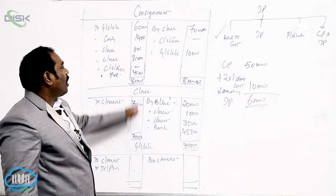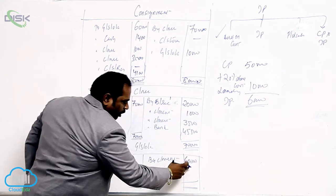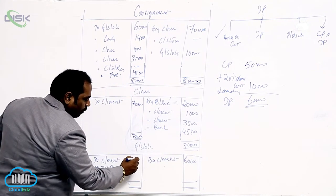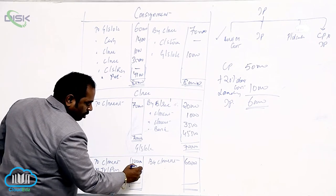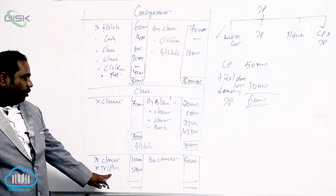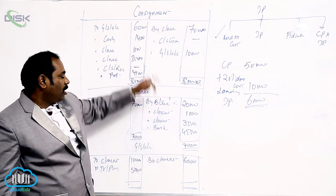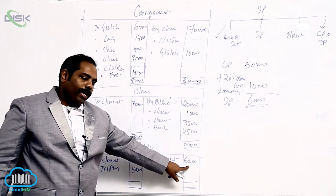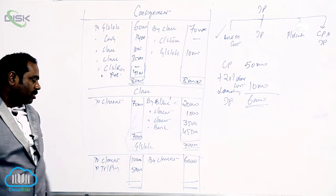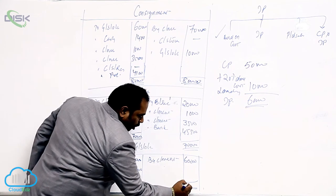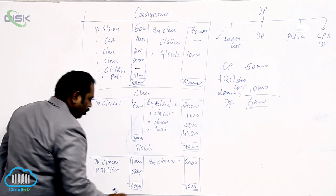By consignment, we sent the goods at invoice price. Whenever goods are sent at invoice price, that has to be unloaded by writing on the debit side. The balancing figure is transferred to trading or purchase account. Because goods were sent at invoice price and unloaded on the debit side, only the cost price — 60 minus 10 — should be transferred to trading or purchase.